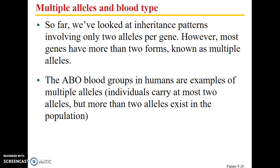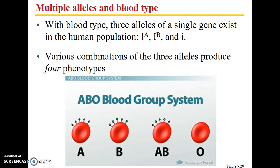Another example is multiple alleles. Most genes are polygenic in nature, meaning they require information from more than a single locus to produce a complete functional trait. The ABO blood groups in humans are a good example of multiple alleles. Individuals carry at most two alleles, but more than two alleles can exist in the population. With blood type, three alleles of a single gene exist in the human population, denoted as I superscript A, I superscript B, and little i.